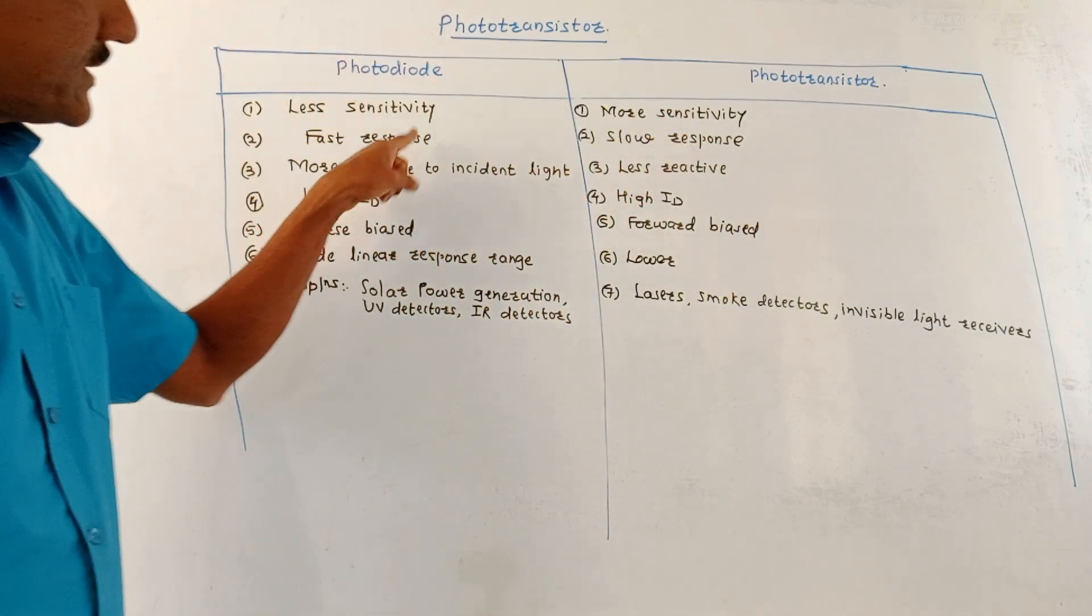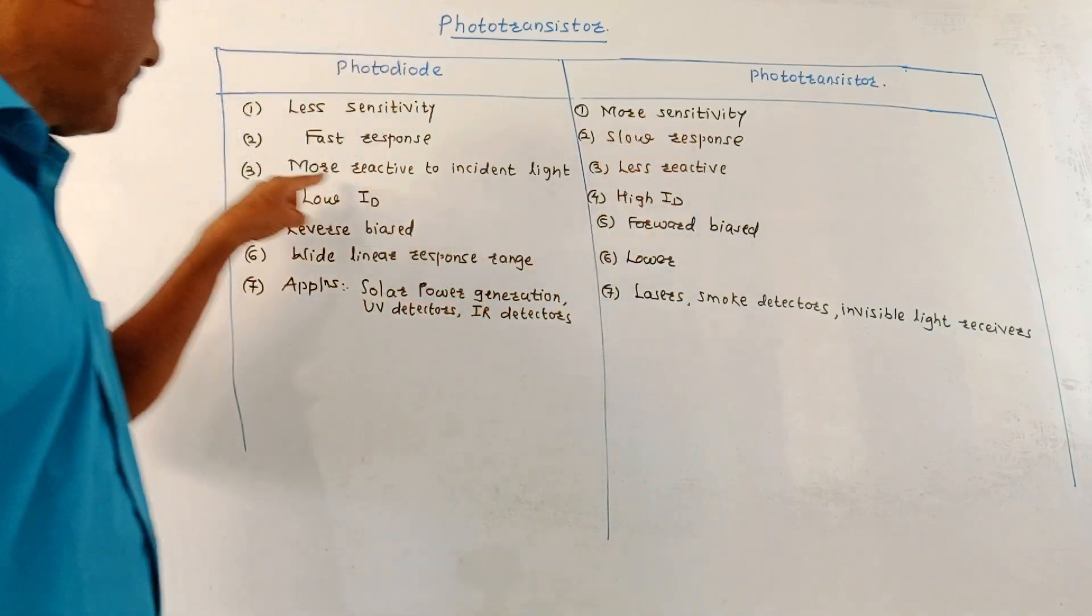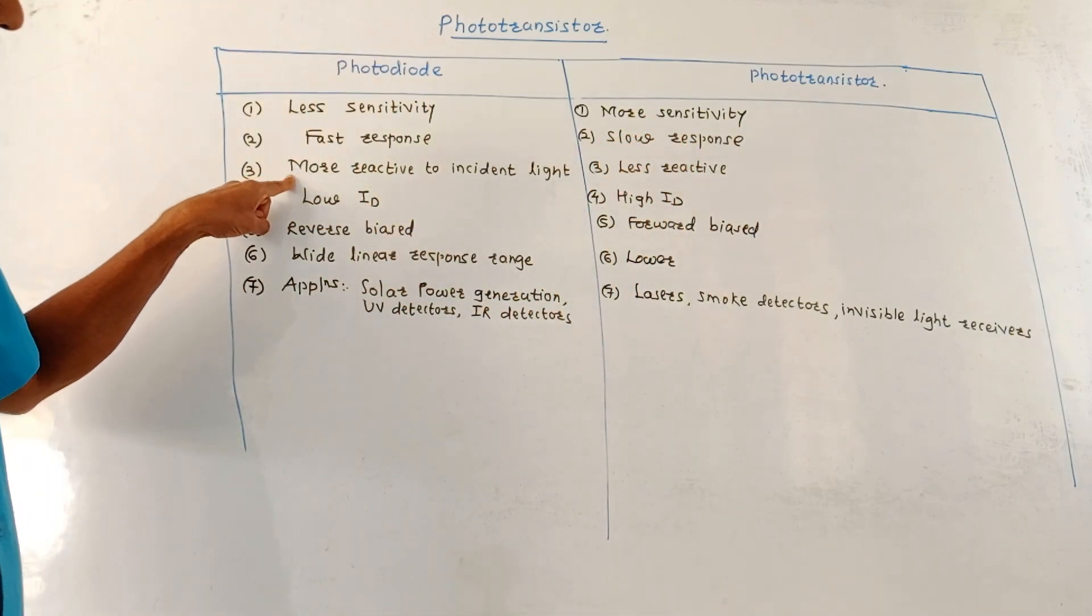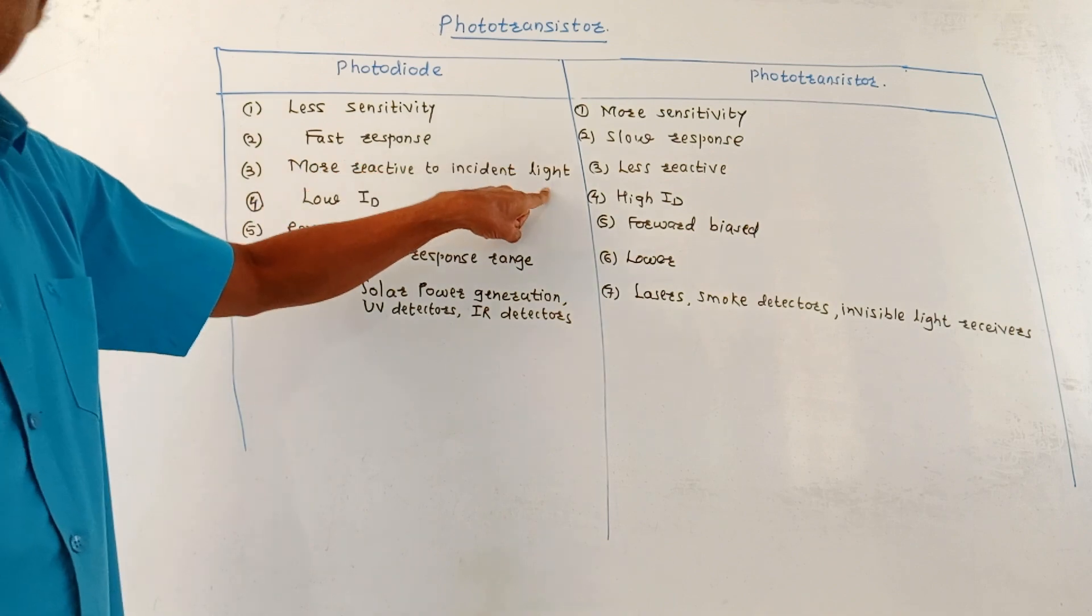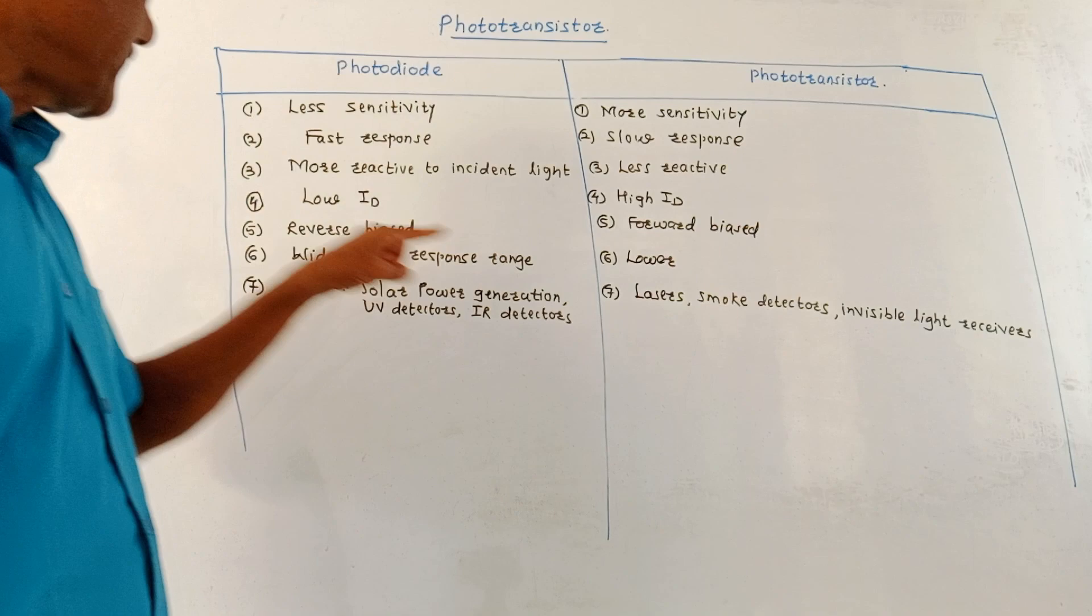Response of photodiode is fast compared to the phototransistor. Naturally, this response is slow. Third, photodiode is more reactive to the incident light whereas phototransistors are less reactive to the incident light.